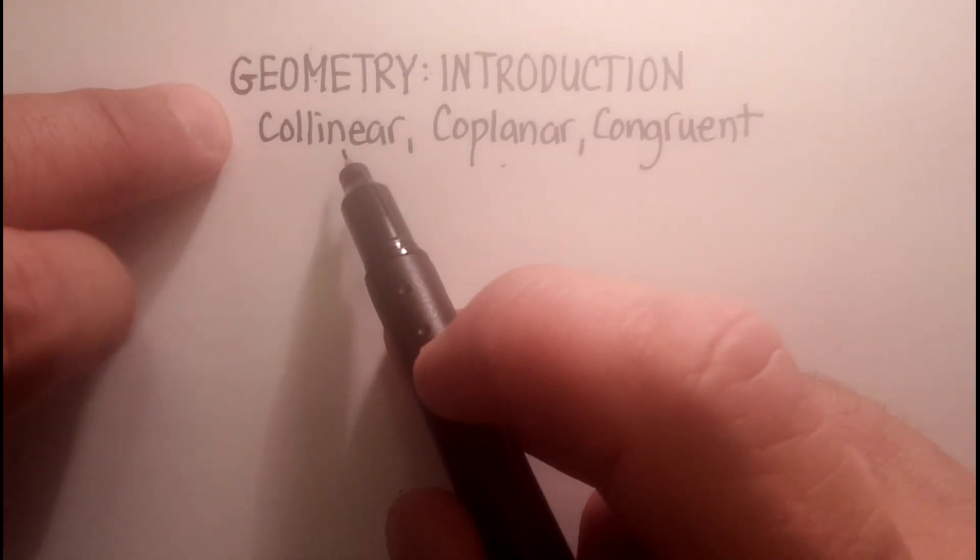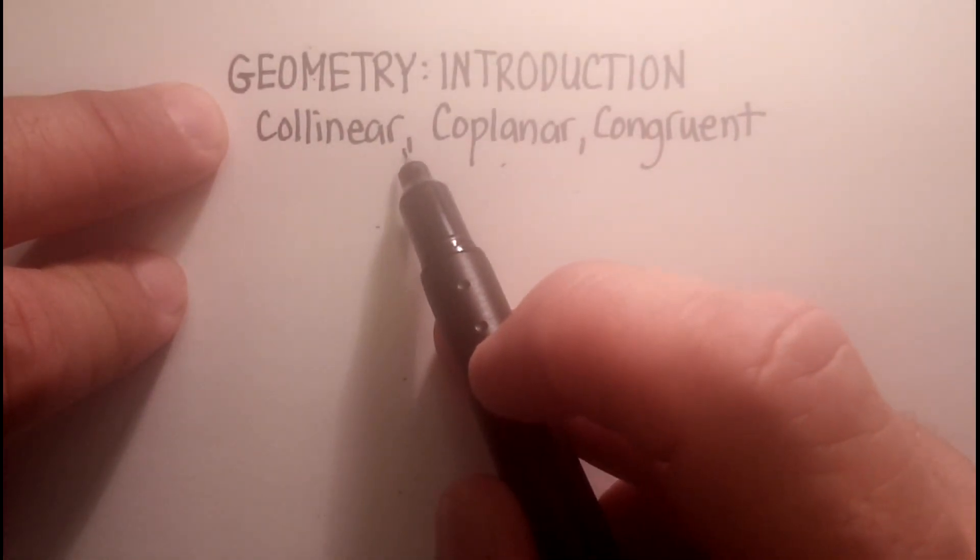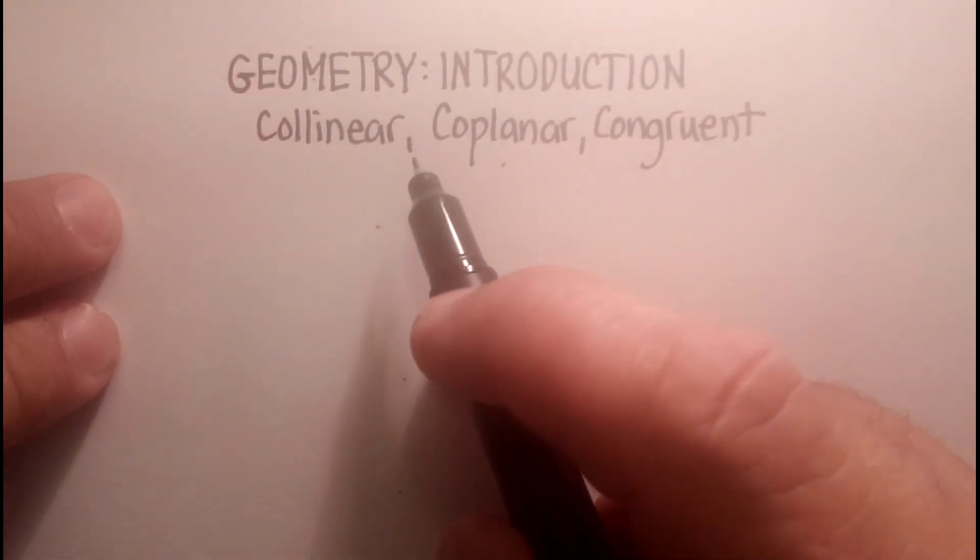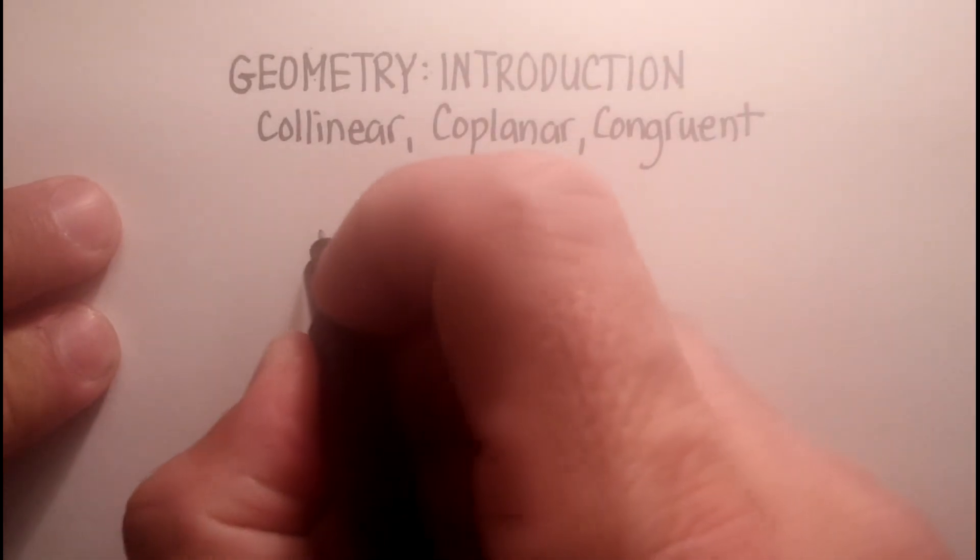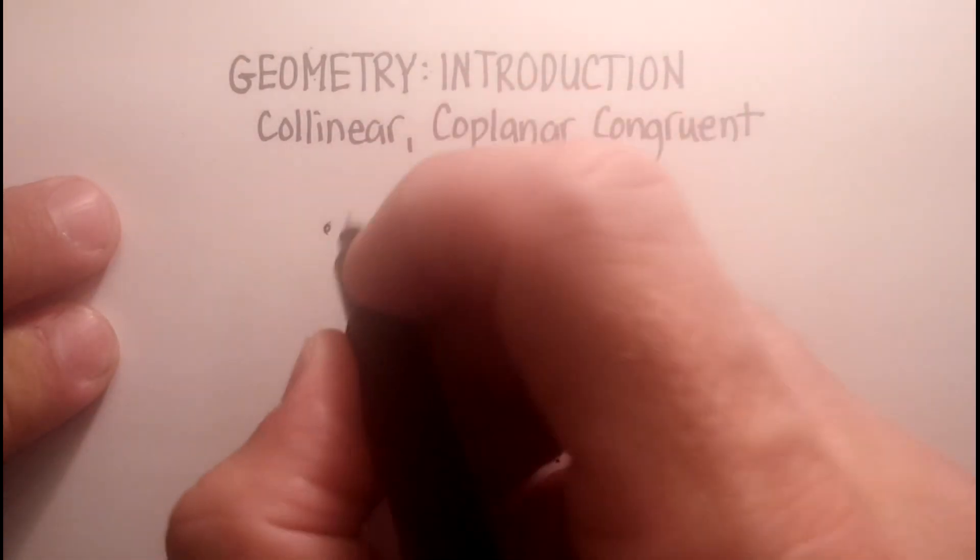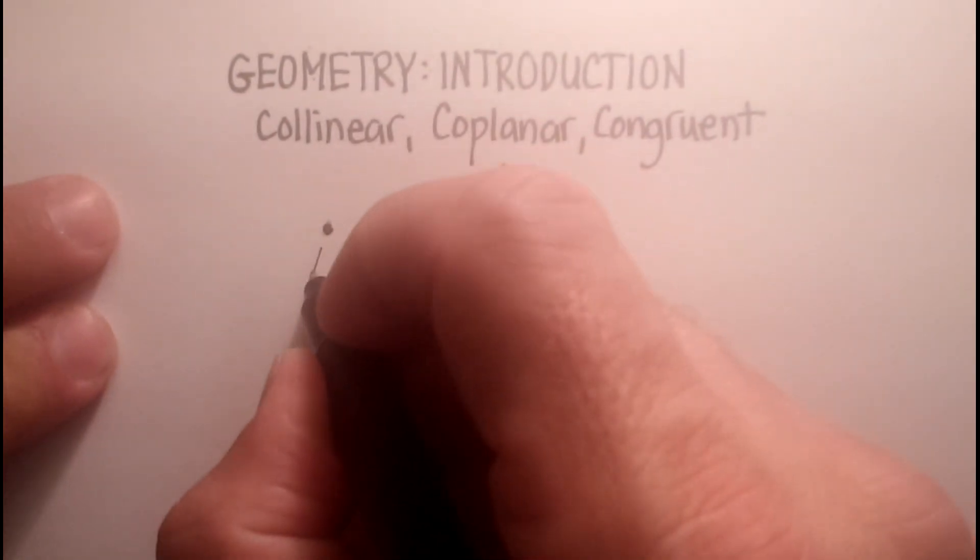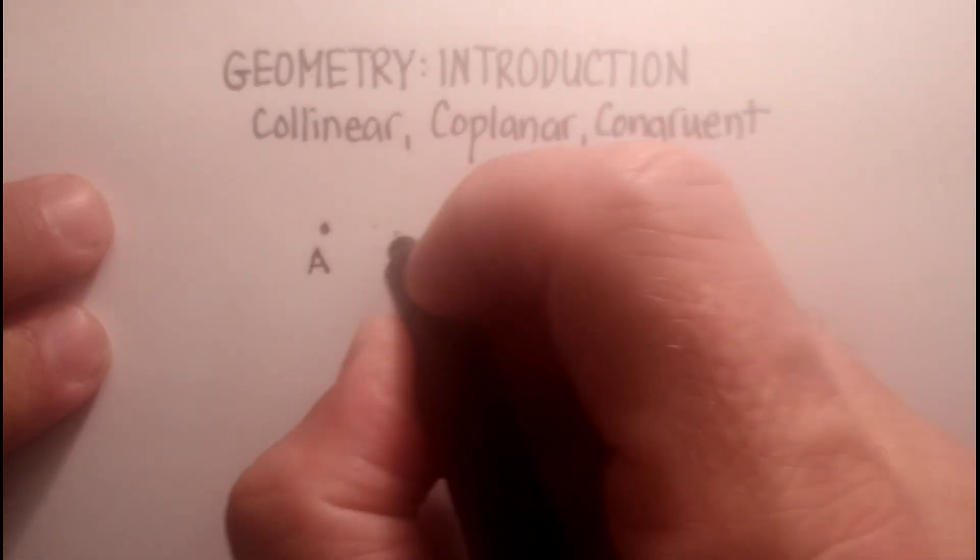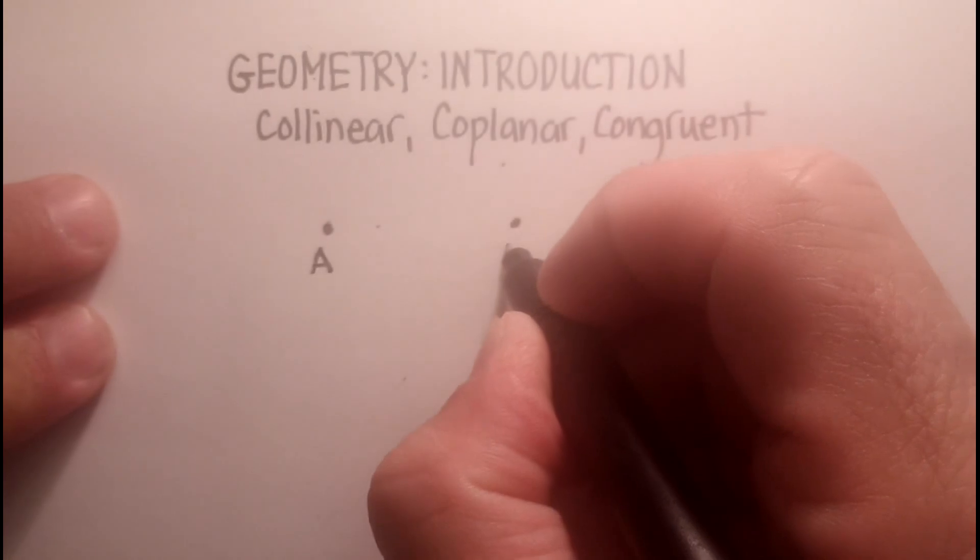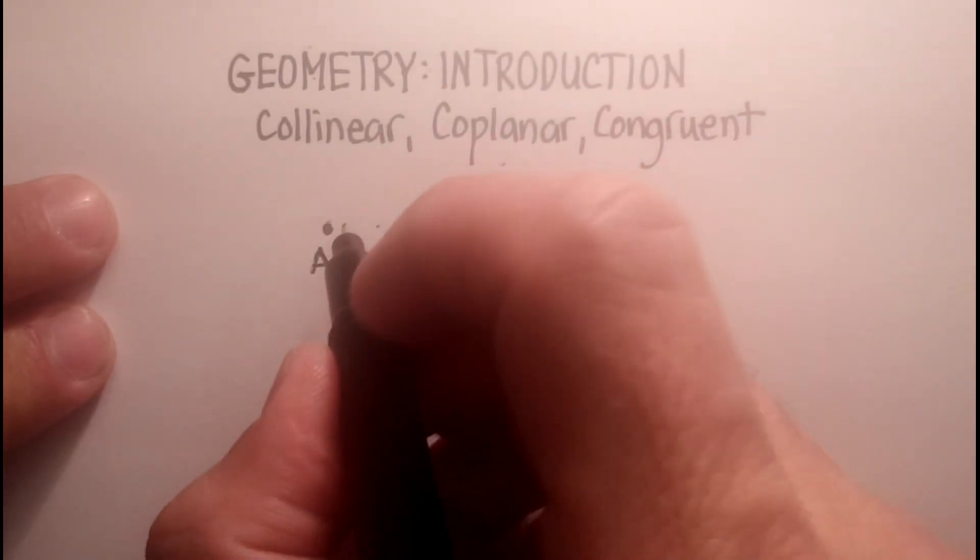So look at collinear. The word, you can see there's a root word in here, and it's line or linear, and that has to do with lines, obviously. So let's draw a line, and I'll show you how this concept plays out. Remember, to do a line, you need at least two points. So let's put in line A and B.